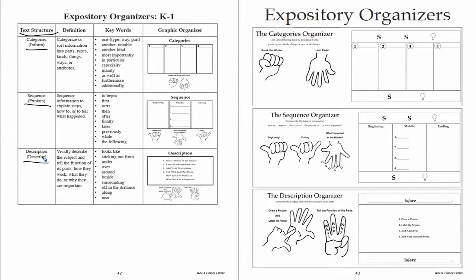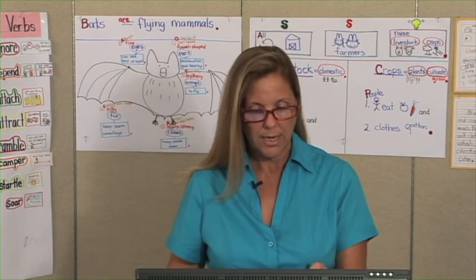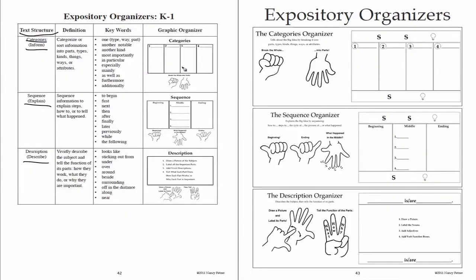On this chart, I gave you a definition of what categories is, and then some keywords that you could use for transitions, and also the organizer with the hand sign. On the opposing page is the categories definition, hand signal, and the organizer.